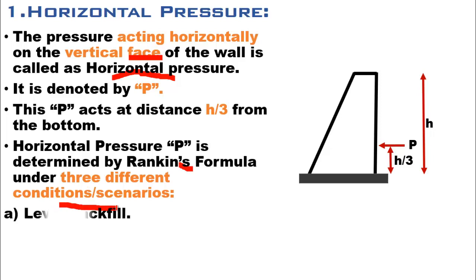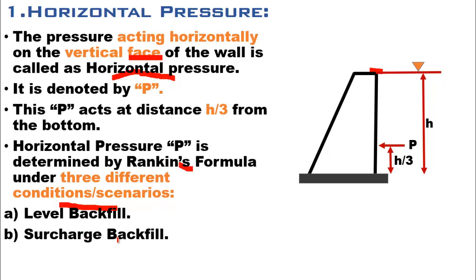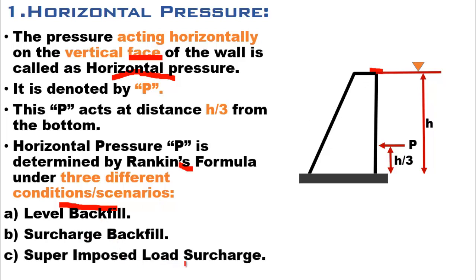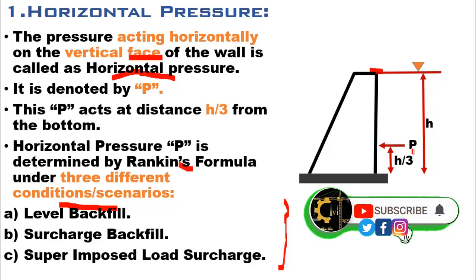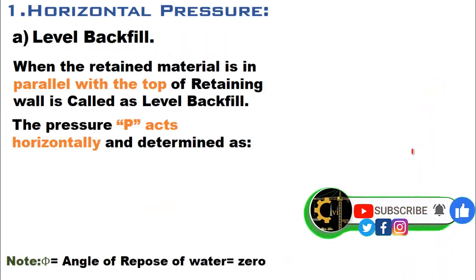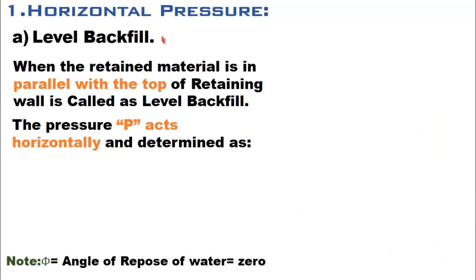Rankine's formula has three different conditions. The first is level backfill — when the backfill material is parallel to the top of the wall. The second condition is surcharge backfill. The third is superimposed load surcharge. We will determine horizontal pressure for each of these three conditions and then determine the resultant pressure.